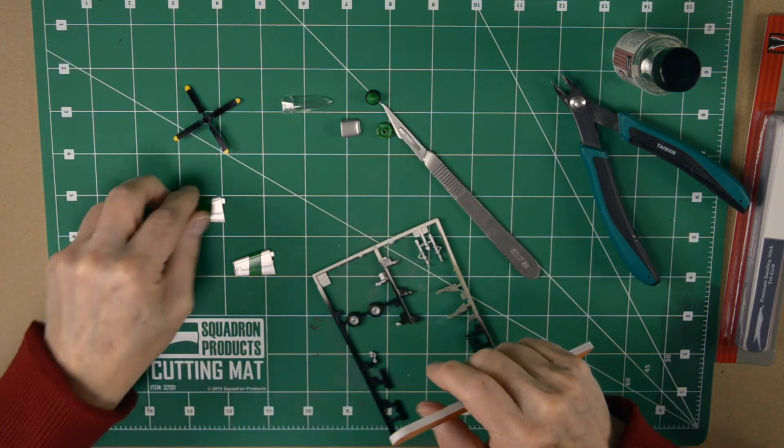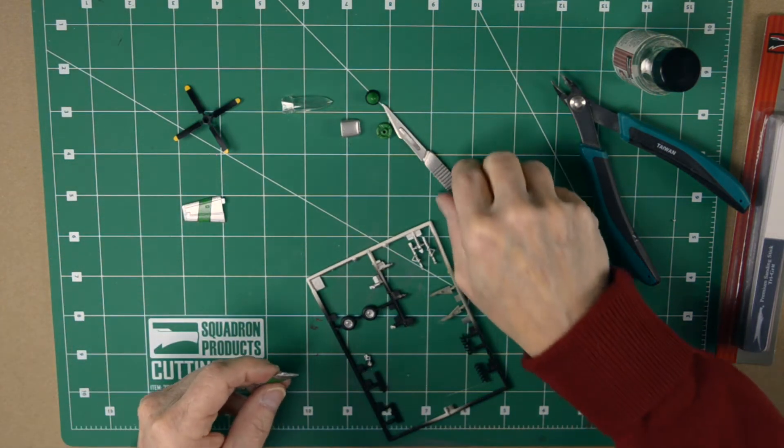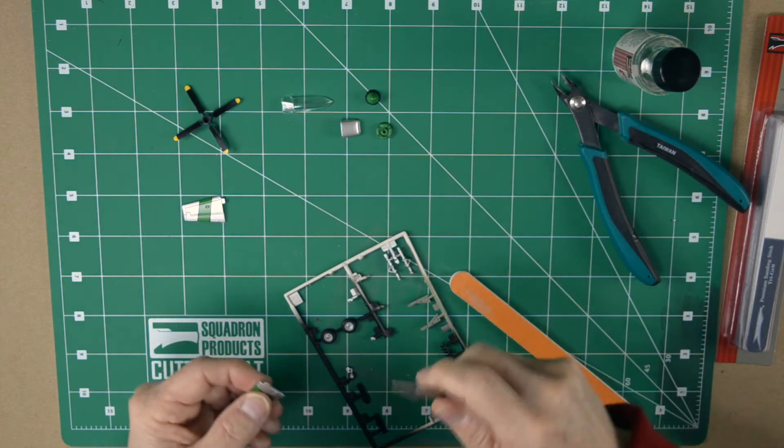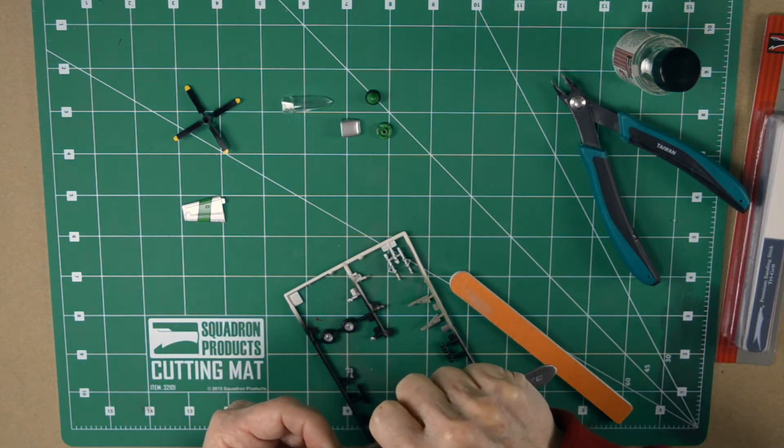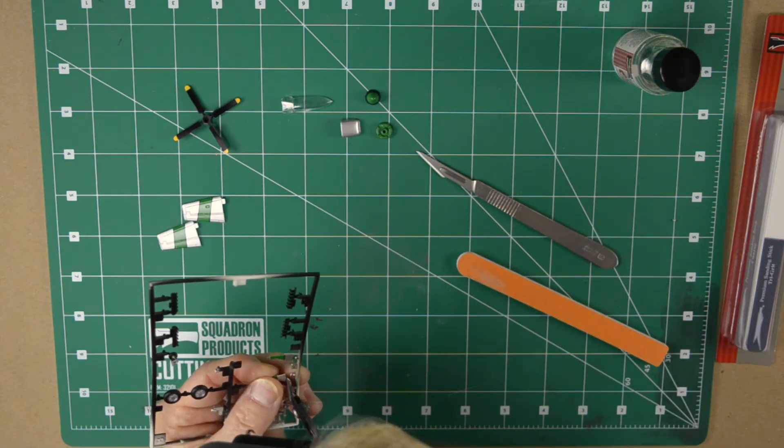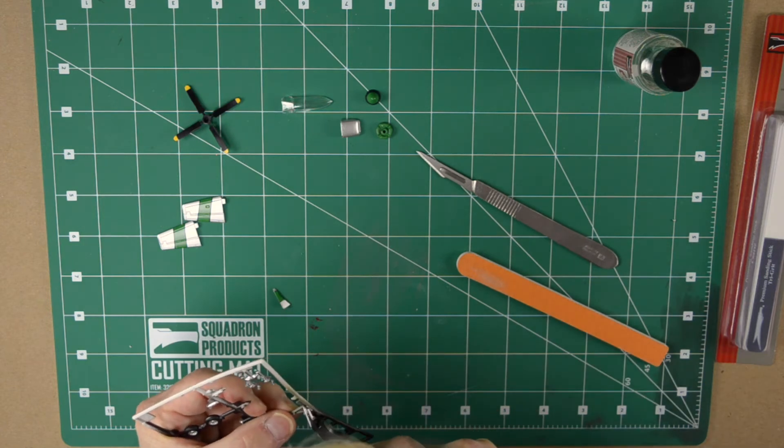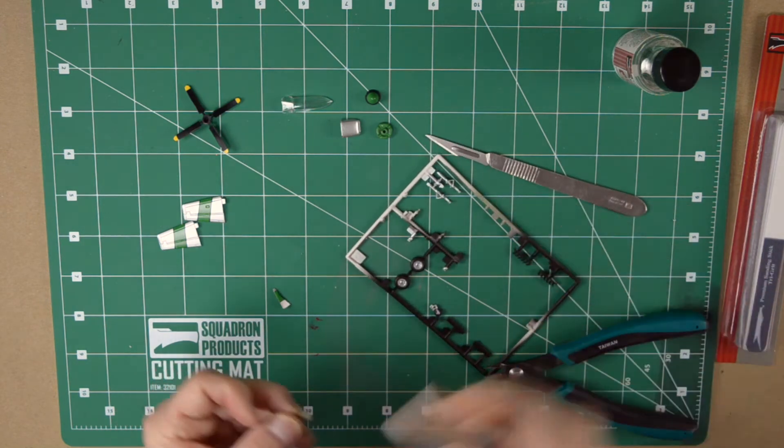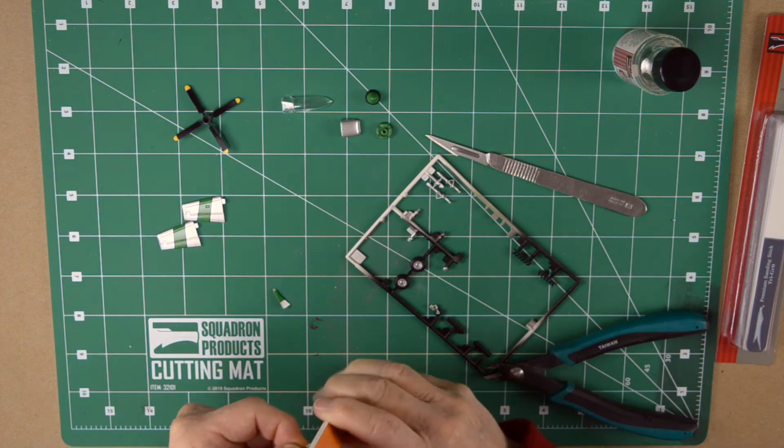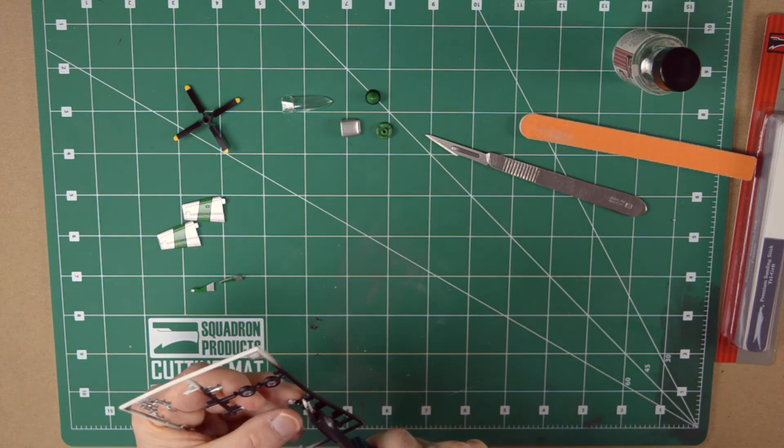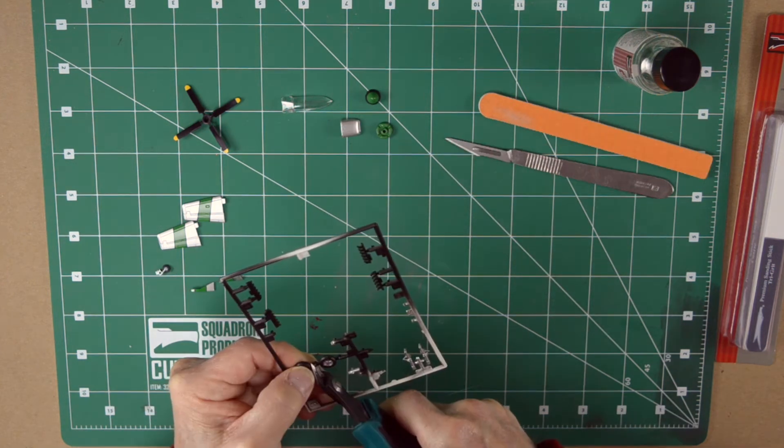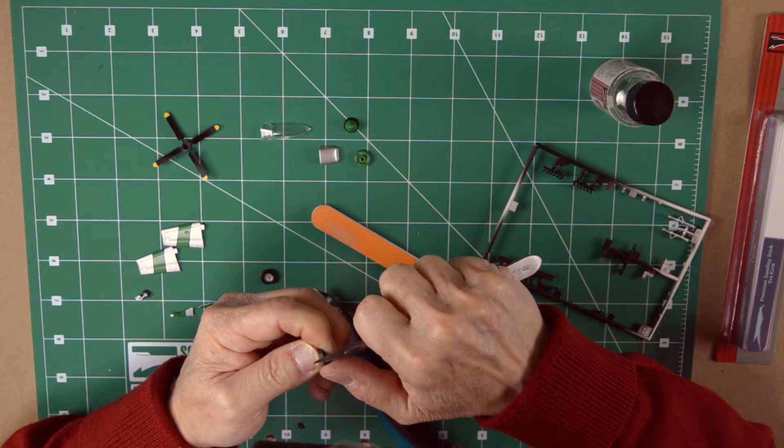There's our clean edge on the first horizontal stabilizer. Then you do the same thing with the other one. Cut the excess plastic. The reason why I cut all the parts from the sprue tree in this kit is because there aren't too many parts and I have a better visual of seeing the parts when they are removed from the sprue tree.